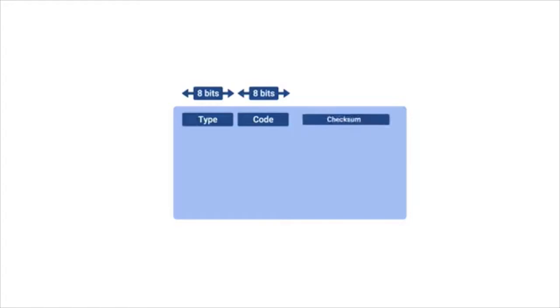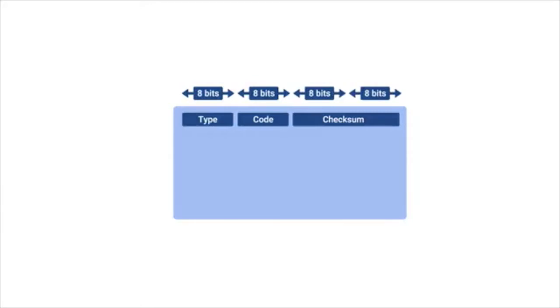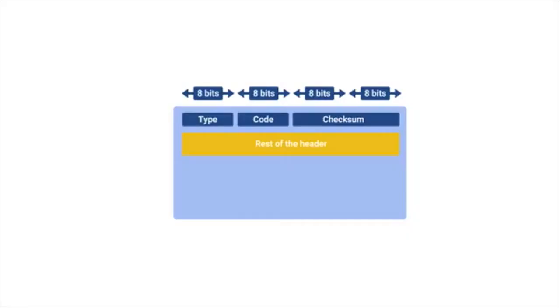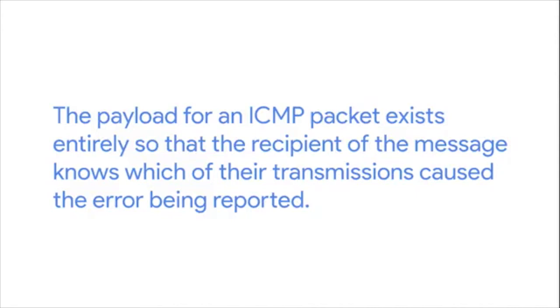After this is a 16-bit checksum that works like every other checksum field we've covered. Next is a 32-bit field with the uninspired name 'rest of header,' which is optionally used by some specific types and codes to send more data. After this is the data payload for an ICMP packet. The payload exists entirely so that the recipient of the message knows which of their transmissions caused the error being reported. It contains the entire IP header and the first 8 bytes of the data payload section of the offending packet.